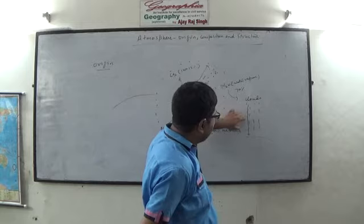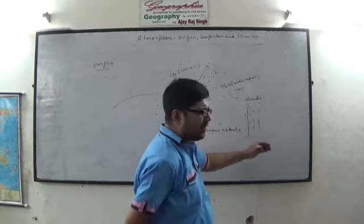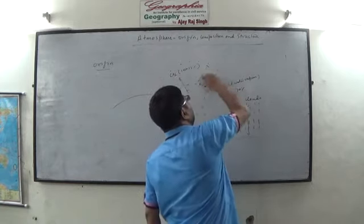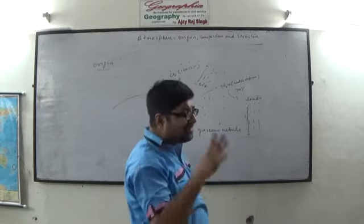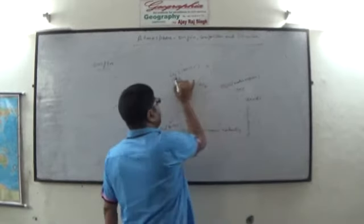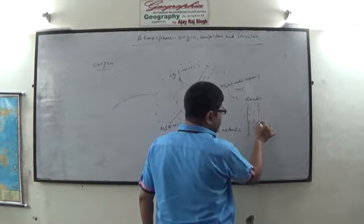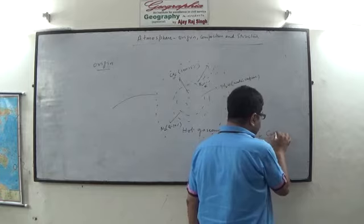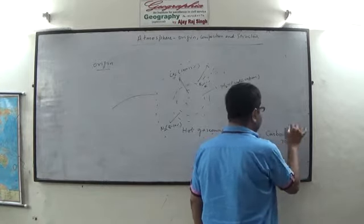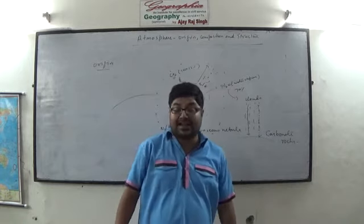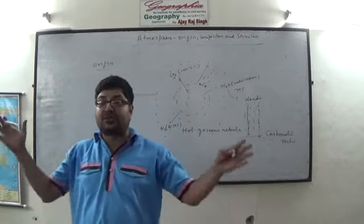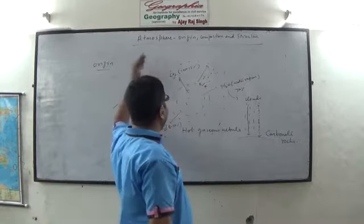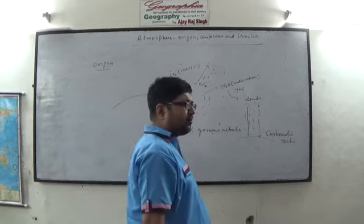Falling drops of rain expedited cooling and removed water vapor from the atmosphere, bringing it onto the earth's surface. Because of the reduced water vapor, more and more heat could be lost through space. Additionally, these falling drops of rain dissolved much of the carbon dioxide, and this carbon dioxide-dissolved water reached the earth's surface, leading to the formation of carbonate rocks. Carbon dioxide is also a greenhouse gas and was hindering the process of cooling, so when much of it was removed from the atmosphere, the rate of cooling expedited further.